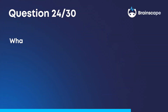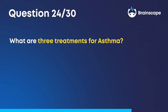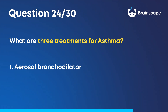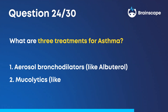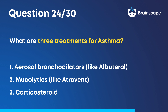Question 24. What are three treatments for asthma? One, aerosol bronchodilators, like albuterol. Two, mucolytics, like Atrovent. And three, corticosteroids, like methylprednisolone.